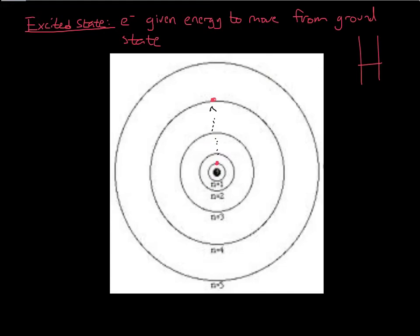Just like when you throw a ball up in the air and gravity pulls it back down, the charge from the nucleus is going to pull that electron back down — it's not going to stay up in the excited state. It will fall back down to ground level. When it does, depending upon the amount of energy that went in, that same amount of energy comes back out. The electron is bumped up with a certain amount of energy, and then it falls back down and releases the same amount of energy.